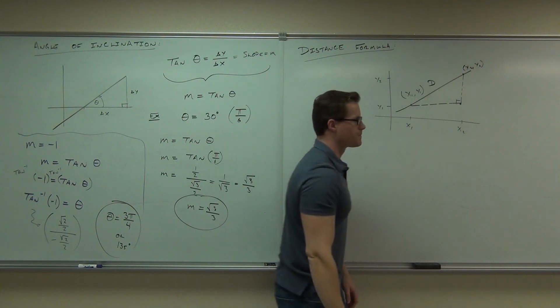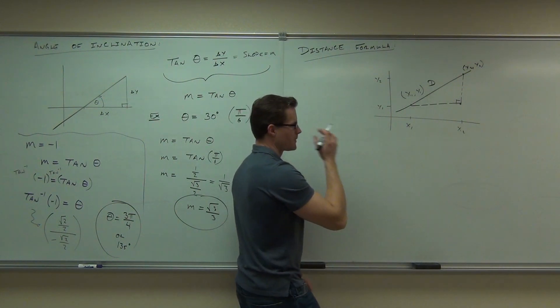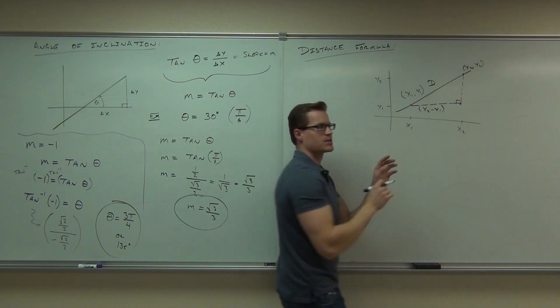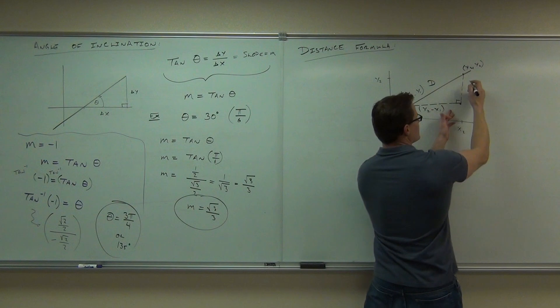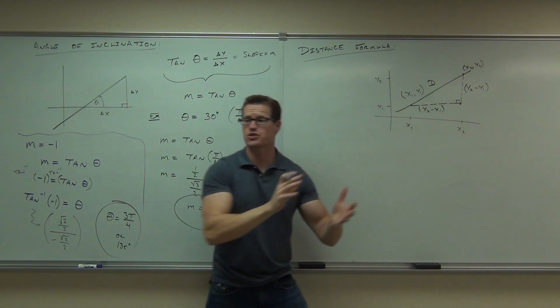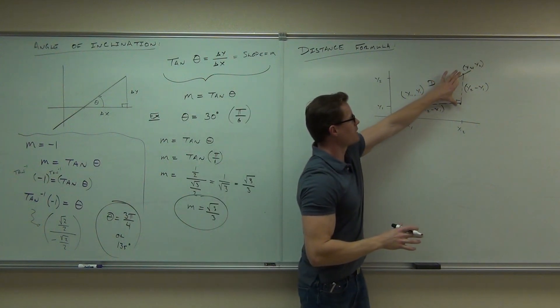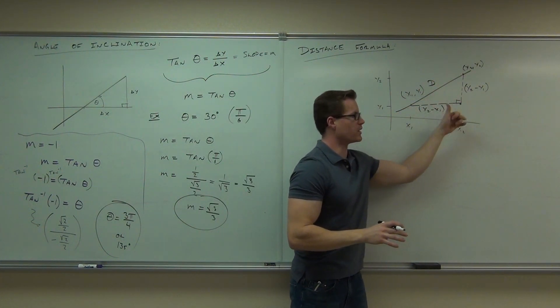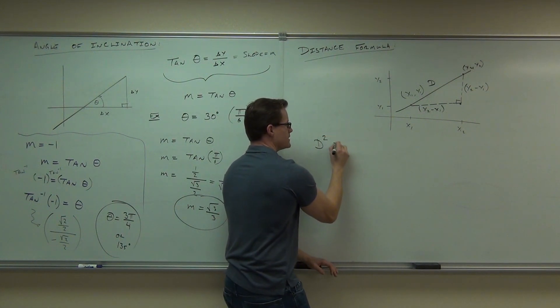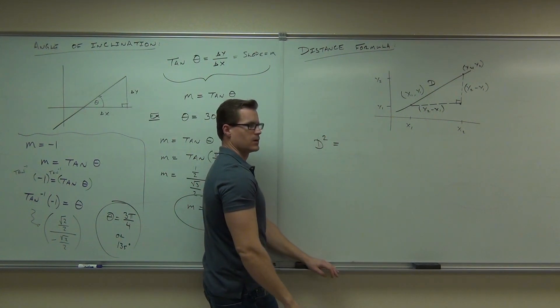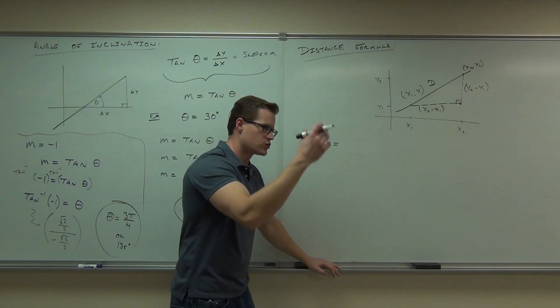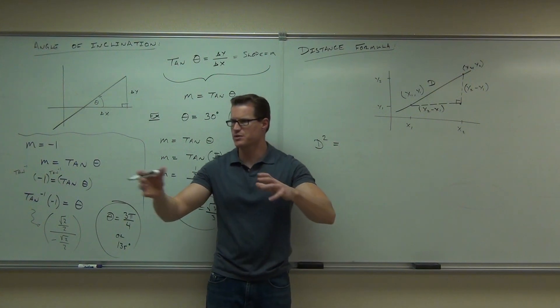If we call this our distance, here's what we can say. We know that this length is x2 minus x1 by the same stuff that we just did with slope formula. We know that this distance is y2 minus y1 by the same stuff we just used on our slope formula. This is the length. This is the length from those corresponding points. We want to find the distance. If we do Pythagorean theorem, we've got d squared equals. What's Pythagorean theorem say?